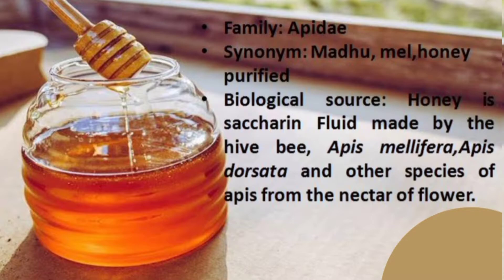The synonyms of honey are 'mel' or 'honey purified.' As a biological source of honey, it is a saccharine fluid — because it is a saccharide, it is full of sugars. This saccharine fluid is collected in the beehive.